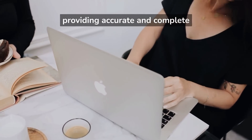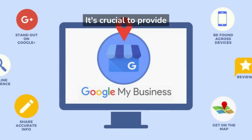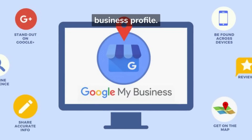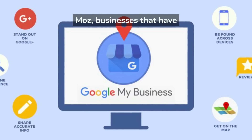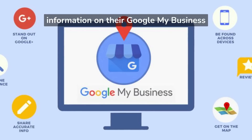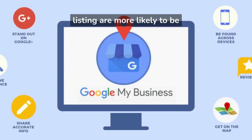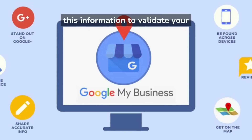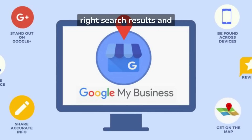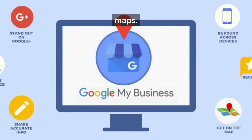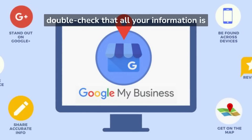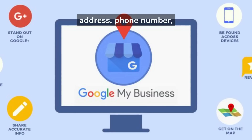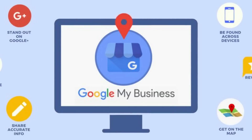Google uses this information to validate your business and show it in the right search results and maps. Therefore, make sure to double-check that all your information is correct and up-to-date, including your business name, address, phone number, website, and hours of operation. Tips for optimizing your profile: 1. Add high-quality photos — according to Google, businesses with photos receive 42% more requests for driving directions on Google Maps and 35% more click-throughs to their websites. 2. Encourage reviews — according to a survey by Bright Local, 84% of people trust online reviews as much as personal recommendations.